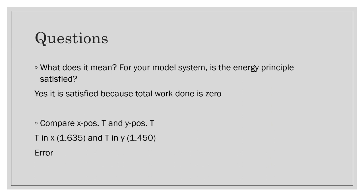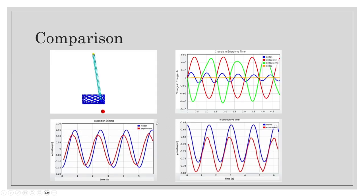Compare X position T and Y position T. T for X, we had 1.635, and for T for Y, we had 1.450. There are different values because of some type of error we had, as I stated earlier. It would be exact values, like the same values, such as in this one, but because of an error, it's okay.